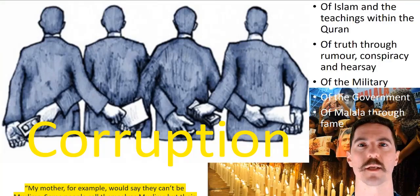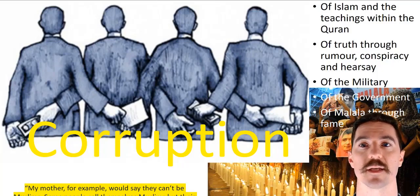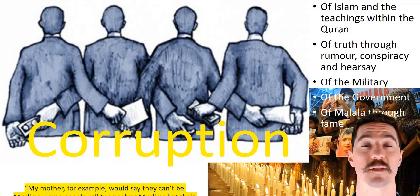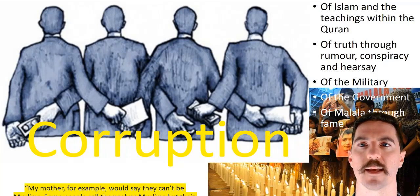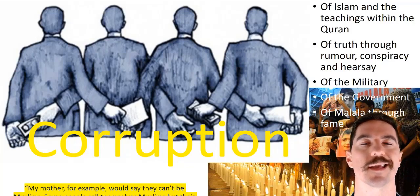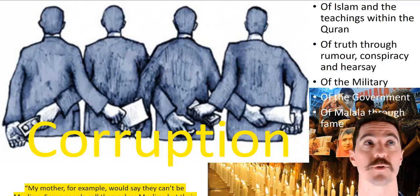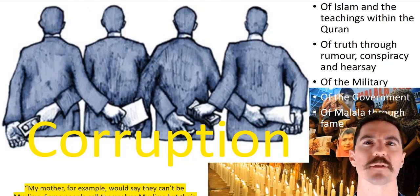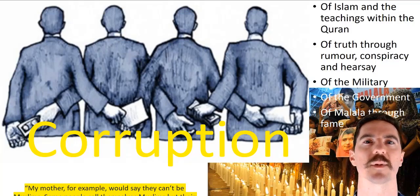Our first theme is corruption. Looking down the right-hand side, we're talking about the corruption of Islam and the teachings within the Quran, which is something she believes is occurring constantly and she makes many references to. There's also the corruption of truth through rumor, conspiracy, and hearsay. She sees this as running counter to her belief in truth, education, and self-betterment through knowledge — for example when people accused the Americans of doing corrupt things through conspiracy theories.